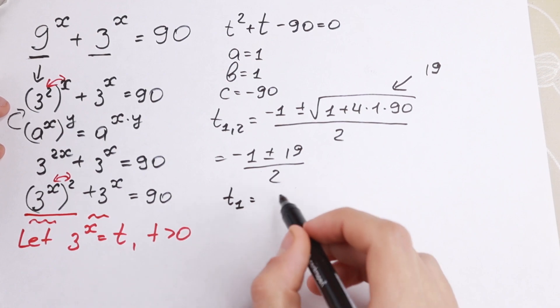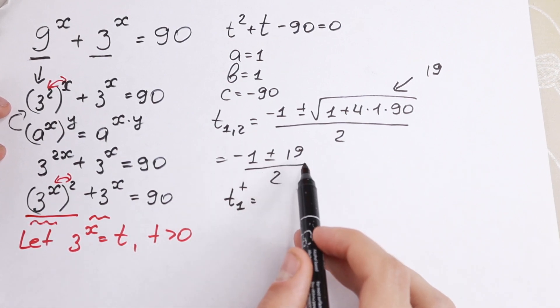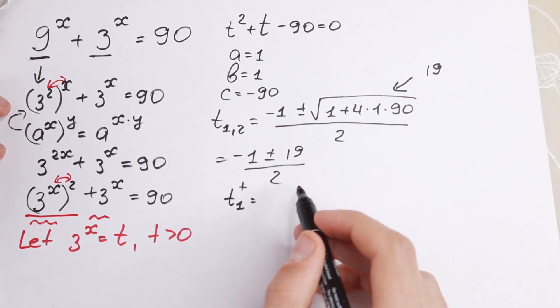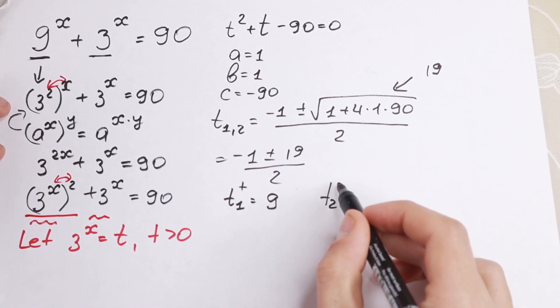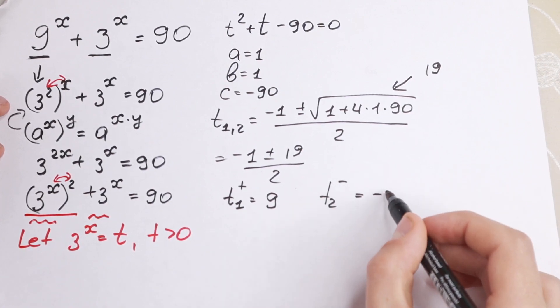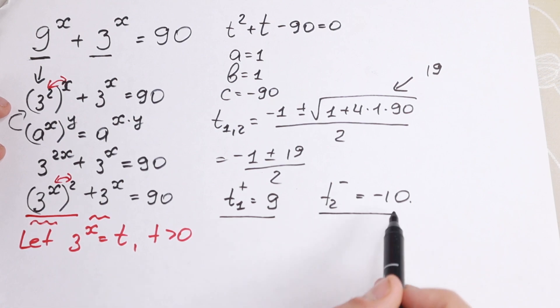The first one, t1, will be equal to... Let's take with the plus sign. We will have minus 1 plus 19 and dividing by 2. We will have 9. And t2, with the minus sign, we will have minus 1 minus 19 minus 20. Dividing by 2, we will have minus 10. So as you can see we will find two roots. 9 and minus 10.